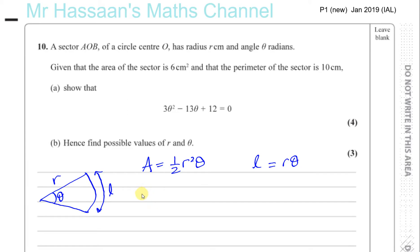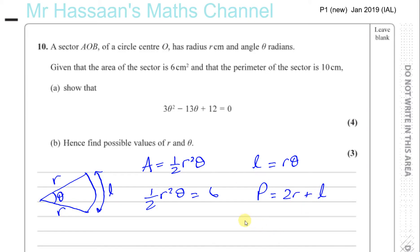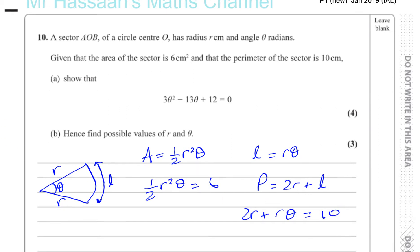They told us that the area is 6 centimeters squared, so a half times r squared theta is equal to 6. They also told us that the perimeter of the sector is 10. The perimeter of a sector is given by the length of its outline, so you've got 2 radii, meaning it's 2r plus l. So we can say 2r plus r theta is equal to 10.